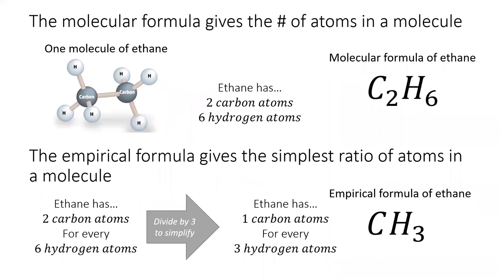Along with the molecular formula, we can also write something called the empirical formula. The empirical formula was invented before we knew about molecules, so it just gives the simplest ratio between the elements in the compound. For ethane, there is one carbon atom for every three hydrogen atoms, so the empirical formula is CH3.